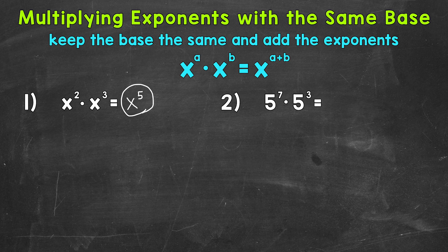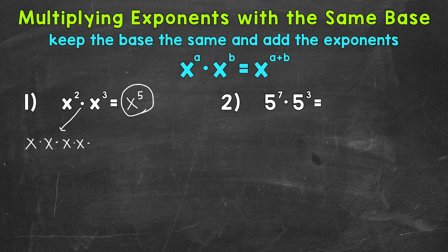Let's see exactly how this works. Starting with x squared — x squared means x times x. I'm going to bring down the multiplication sign that's in between. And then x cubed means x times x times x. This right here is x squared, and this right here is x cubed. And you can see that we have five x's there, which is x to the power of 5.